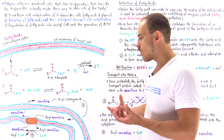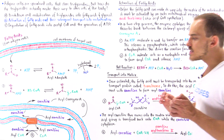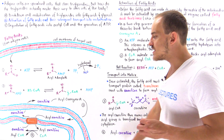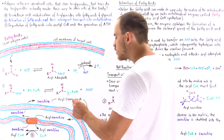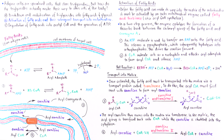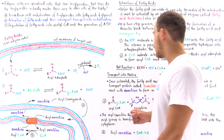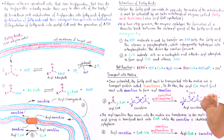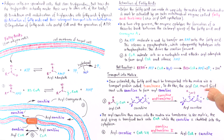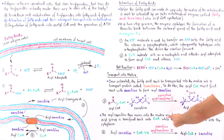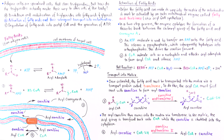Why do we need to form acyl carnitine? Because an enzyme found on the inner membrane of the mitochondria, known as translocase — shown in orange — allows the movement of acyl carnitine molecules across the inner membrane into the matrix. So we form acyl carnitine specifically to shuttle the molecule into the mitochondrial matrix. The acyl coenzyme A must first react with carnitine to form acyl carnitine, catalyzed by carnitine acyl transferase 1, and then acyl carnitine moves into the matrix via translocase.